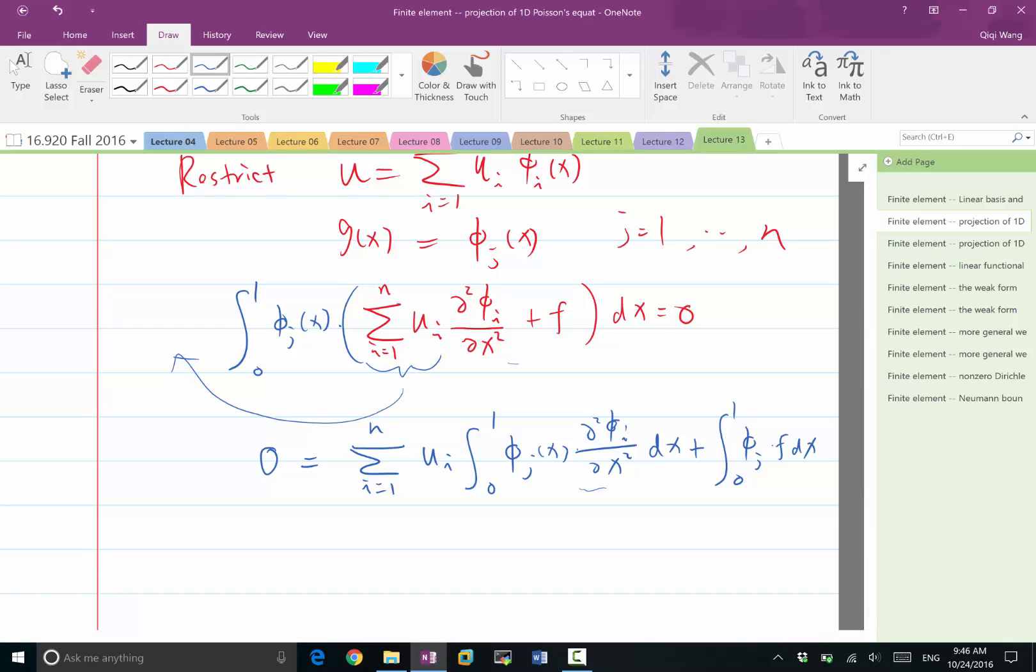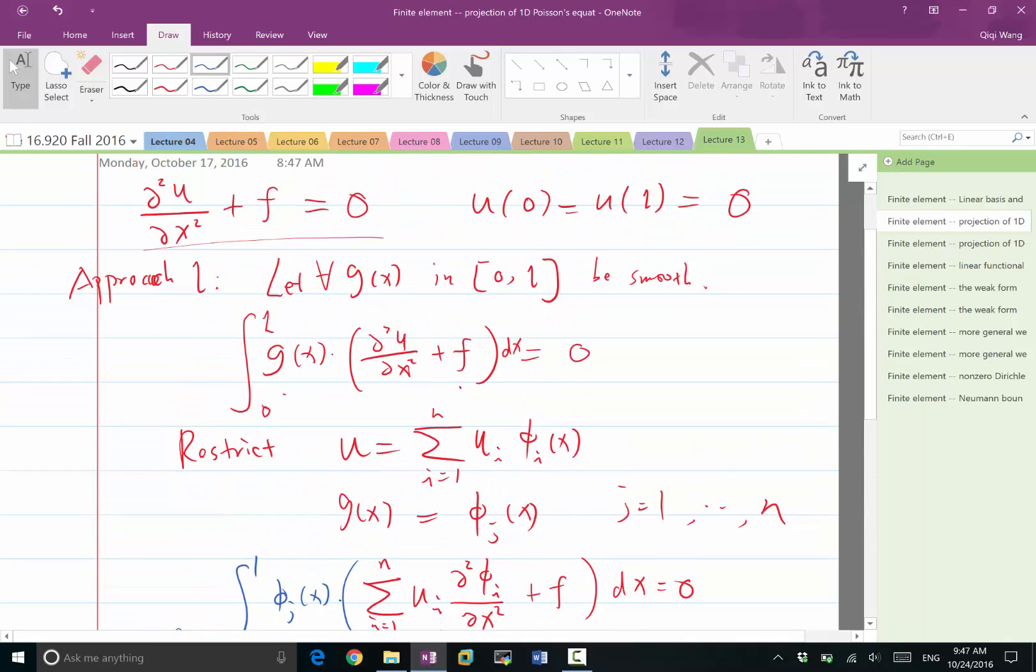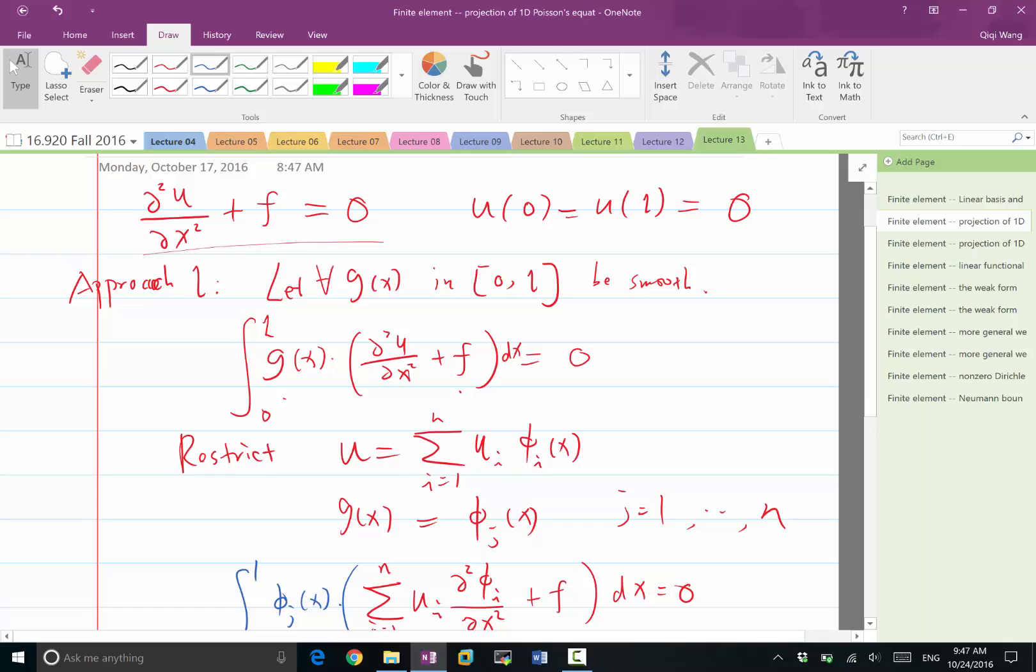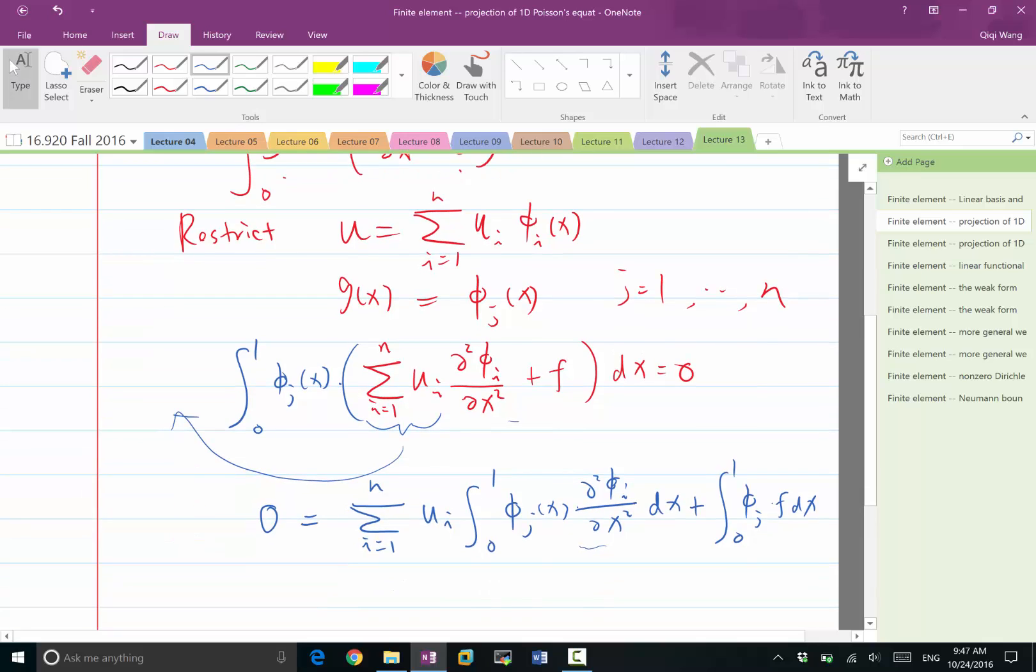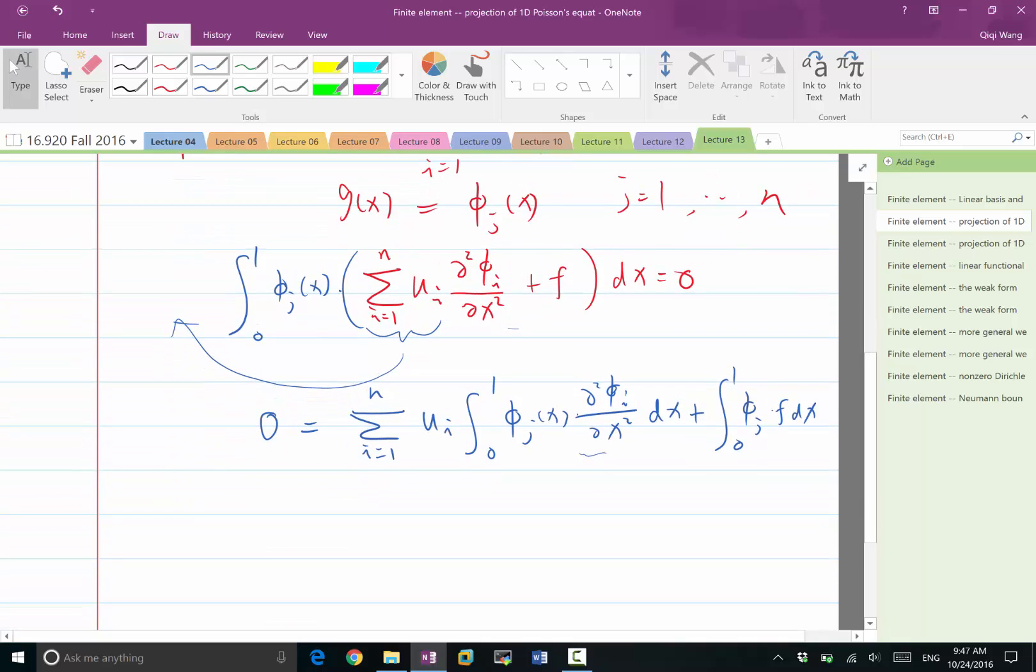Last Wednesday, when we tried to approximate just the function f, instead of solving a second-order derivative of u plus f equal to 0, we were basically solving minus u plus f equal to 0. We are trying to approximate f with a function. So in this case, we simply replace the phi i here by the second-order derivative of phi i. So the following is the same.